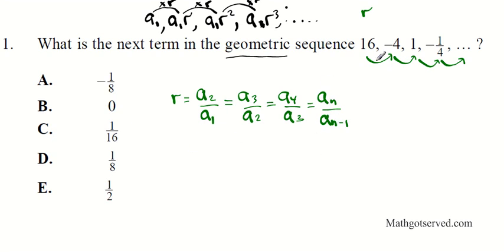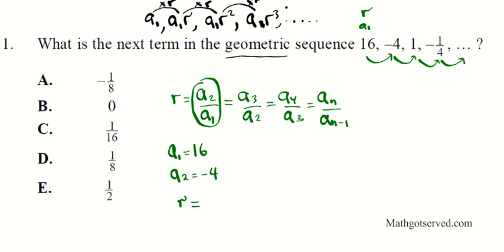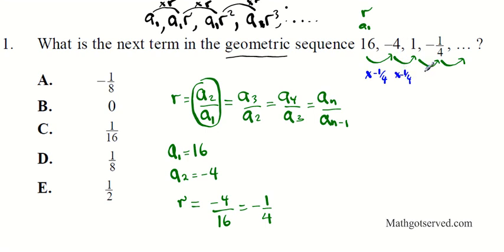In this problem, a₁ is 16 and a₂ is negative 4. To find the common ratio I'll divide a₂ by a₁ — I can use a₃ and a₂ or a₄ and a₃, it doesn't matter, you get exactly the same ratio. So dividing negative 4 by 16, it reduces to negative one-fourth. This means every single time I'm multiplying by negative one-fourth. When you multiply 16 by negative one-fourth you get negative 4; negative 4 by negative one-fourth gives 1; and 1 by negative one-fourth gives negative one-fourth.